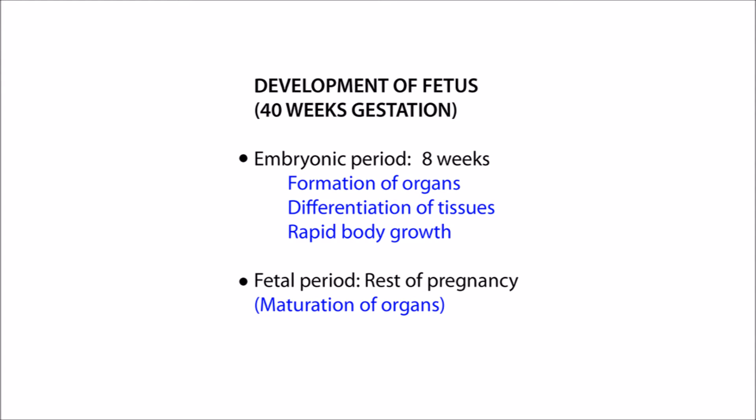We can divide up the 40 weeks of gestation of the fetus into two quite definite periods. The first part is the embryonic period, which lasts for about eight weeks, and during this time there is formation of the organs and differentiation of the tissues. Then the next period is the fetal period, which is the rest of the pregnancy, and it is during this time that we get maturation of the organs.